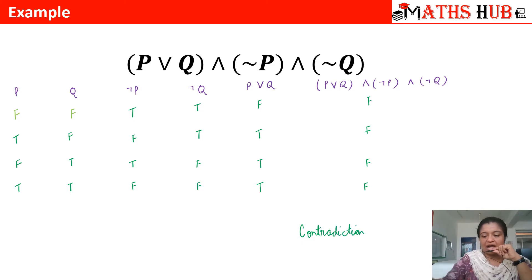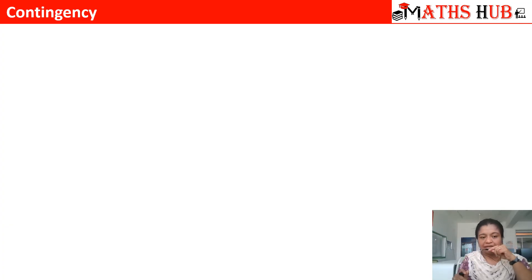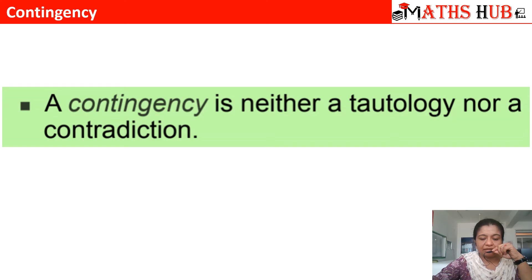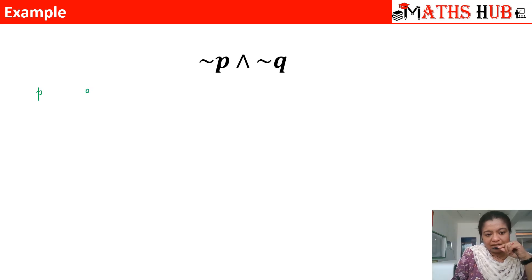Now we move on to the third type of compound statement, which is a contingency. Sometimes it might happen that the truth values may be true or false for some input variables. Whenever the statement is neither a tautology nor a contradiction, that type of compound proposition is called a contingency. Let's check an example: ¬p∧¬q. You can make inputs p and q, then ¬p, ¬q, and finally ¬p∧¬q.